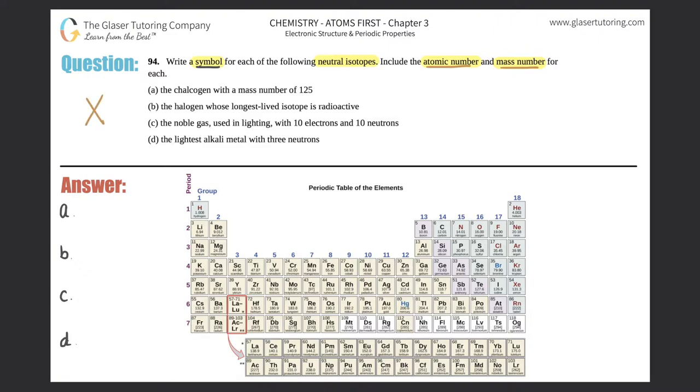Your Z number goes on the top, so I'll just put Z on the top and A on the bottom. Z is always the mass number. A is always your atomic number.